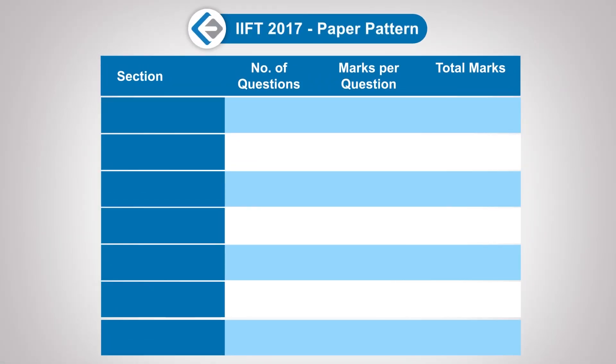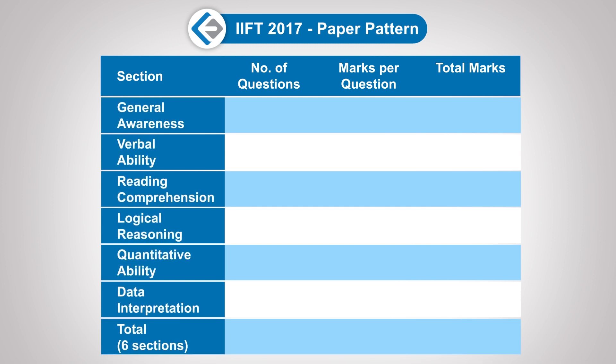Looking at the paper pattern of IIFT 2017, it had six sections. Previously, in 2015 and 2014, there were four sections respectively, so in 2017 two sections were merged to form four. The number of questions was 114, but this is not fixed — it can range from 110 to maybe 130 questions. From the past few years, total marks have been 100, with a negative mark of one-third of the total marks allocated. General Awareness had a total of nine marks — 0.5 marks per question across 18 questions.